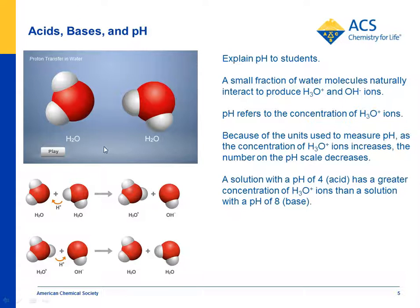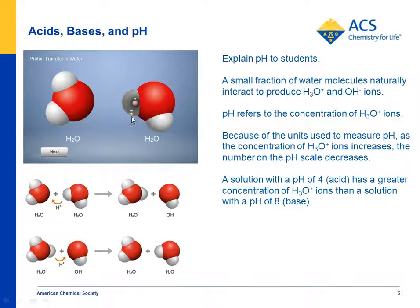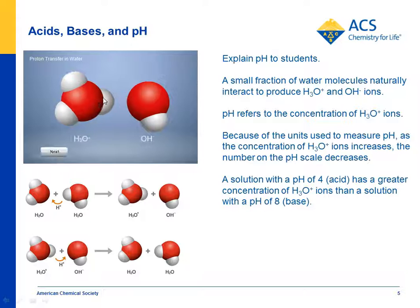In the lesson, we try to give kids an idea of what the pH concept means at the molecular level. The idea is that in any amount of water, water molecules interact with each other and transfer a proton from one water molecule to the other, creating something called H3O+ — meaning three hydrogens, but with a positive charge because only the proton transferred and not the electron.